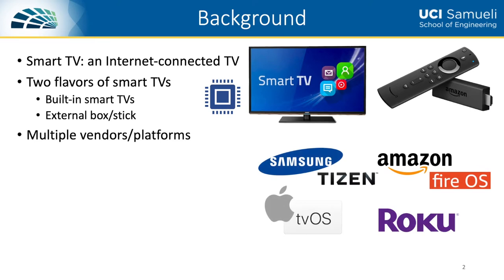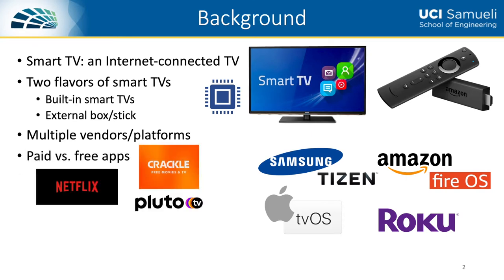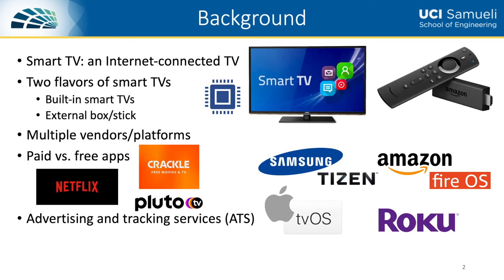There is already a wide selection of smart TV vendors and platforms in the market. One example is Samsung's line of smart TVs, which run the Tizen operating system. Smart TV apps are both paid and free. Examples of paid apps include subscription-based services such as Netflix. Examples of free apps include Kragle and Pluto TV. The vast selection of free apps are usually monetized through advertisements, done by developers integrating libraries that contact advertising and tracking services on the internet. We use the term ATS to refer to these services.